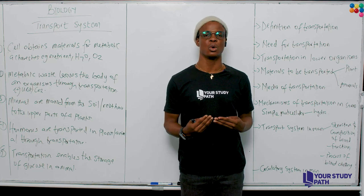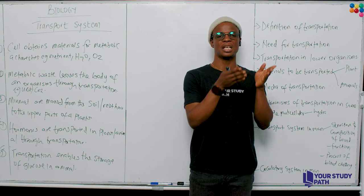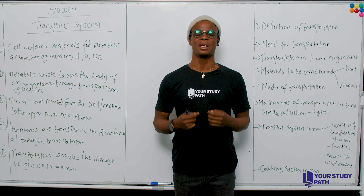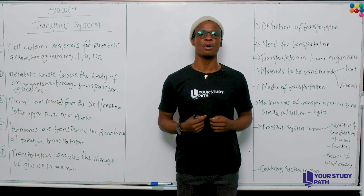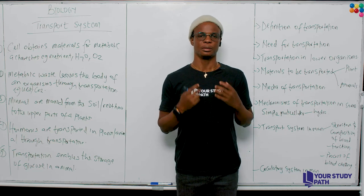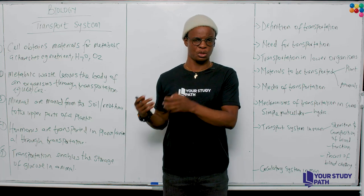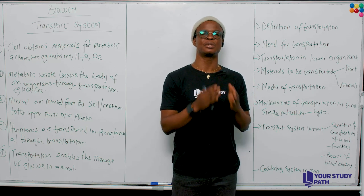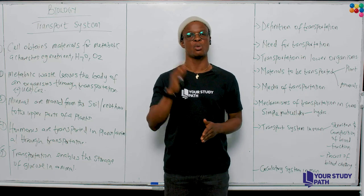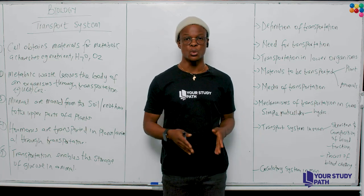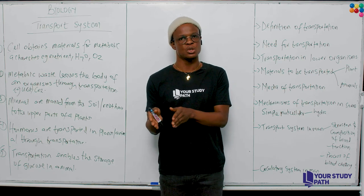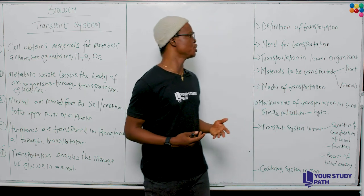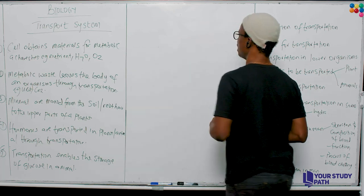In summary, transportation in the body of an organism is needed to circulate materials for metabolic activity and physical activity. It enables materials to move around the body from where they are manufactured to where they are needed, to where they are stored, and eventually to where they leave the body of that organism. Those are the needs for transportation in an organism.